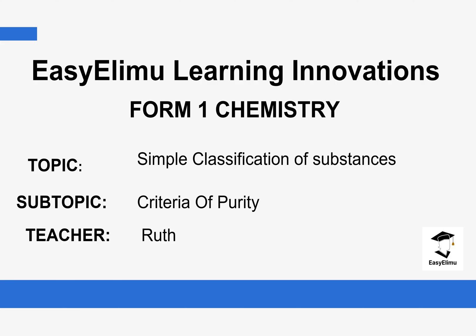Welcome to Easy Elim Learning Simplified. My name is Ruth and today we are going to be discussing the topic of simple classification of substances, looking at the subtopic criteria of purity. Previously we discussed the effect of impurities on melting points — impurities lower the melting point of substances. Today we are going to focus on effects of impurities on boiling points and then make a conclusion.